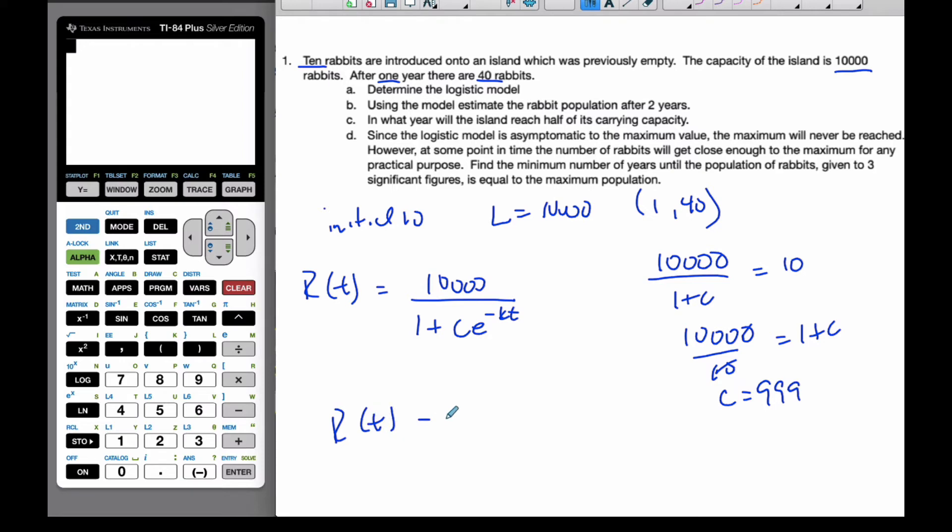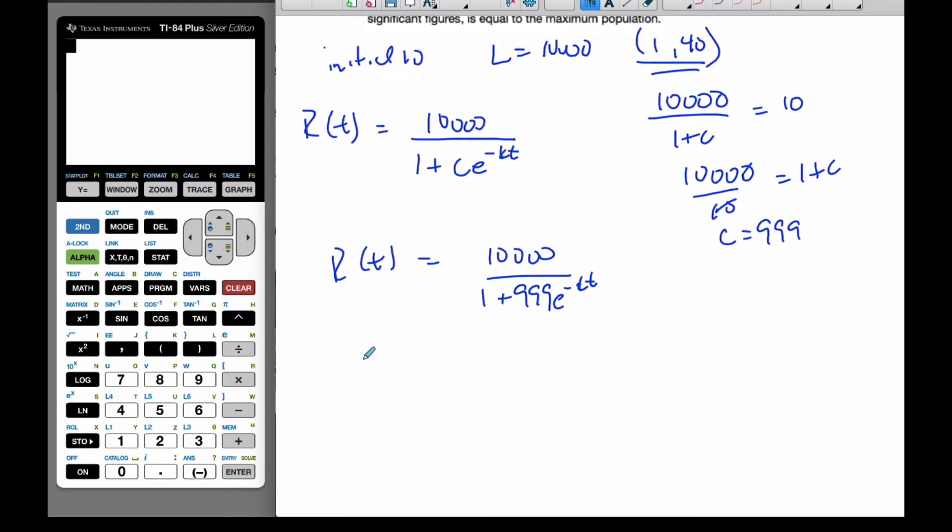And so, as I start to make my model, I end up with 10,000, over 1 plus 999 E to the minus K T. Finding the K value, I use this number here, of 1 to the 40, so I know that R at 1 is going to equal to 40. So, plugging the 1 into my equation, I get 1 plus 999 minus K times 1.